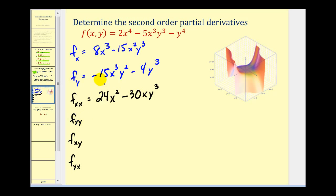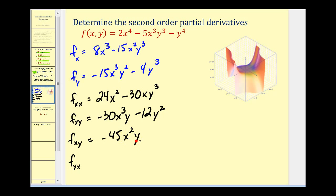For f_yy, we find the derivative of the first partial with respect to y again, giving us negative 30x cubed y minus 12y squared. For the mixed partial, we find the partial derivative with respect to x first and then with respect to y, treating x as a constant. The first term becomes zero, and multiplying by three we get negative 45x squared y squared. Then differentiating the first partial with respect to y, with respect to x, we again get negative 45x squared y squared.